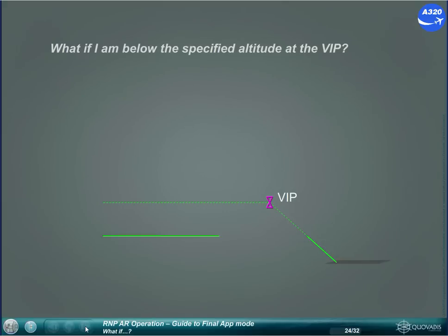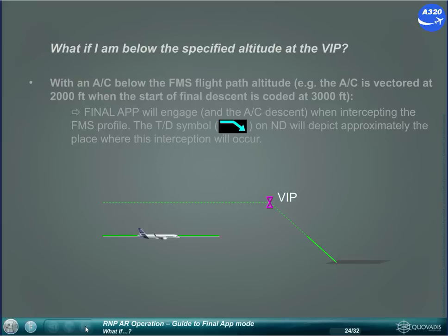What if I am below the specified altitude at the VIP? With an aircraft below the FMS flight path altitude — for example, the aircraft is vectored at 2,000 feet when the start of final descent is coded at 3,000 feet — Final Approach will engage and the aircraft will descend when intercepting the FMS profile. The top of descent symbol on the ND will depict approximately the place where this interception will occur.